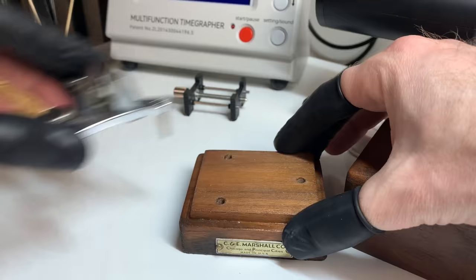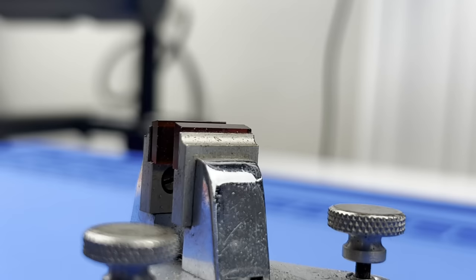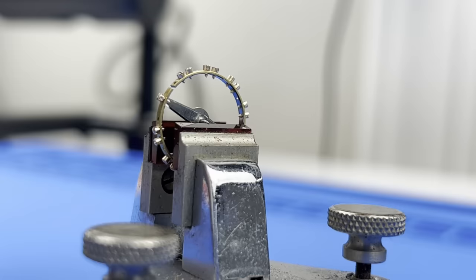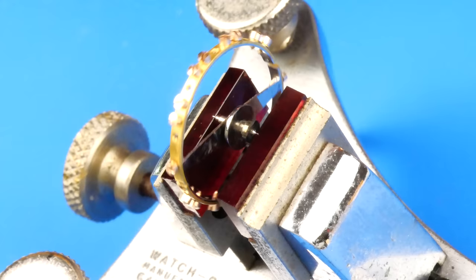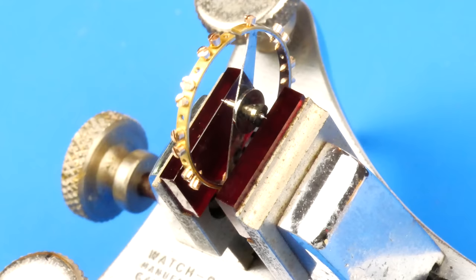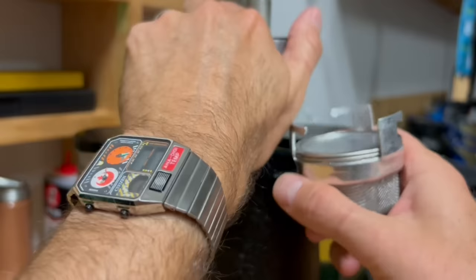Anytime balance work is performed it's always good to double check the poise and make any adjustments as necessary. I do not want wide oscillations like this. Instead I want to see the balance coast freely in one direction and come to a smooth stop with very minimal backlash. Poise was achieved in combination of adding weight to the lighter side by placing timing washers under the screws, or by removing weight from the heavier side by shaving material off the underside of some of the screws.